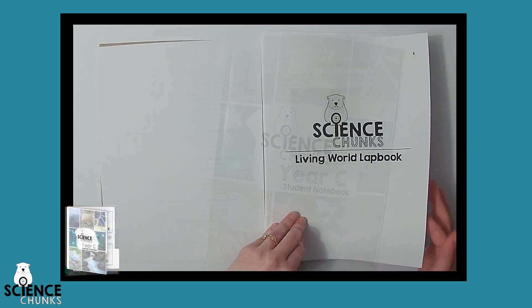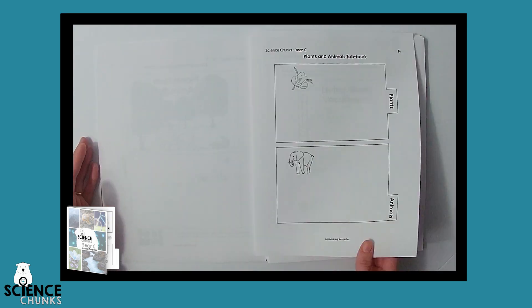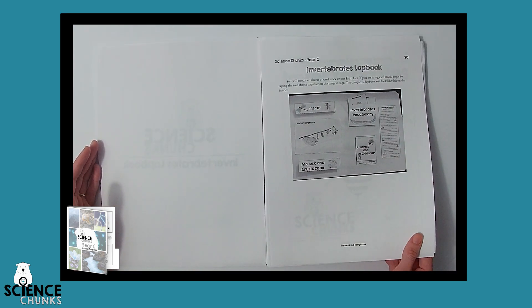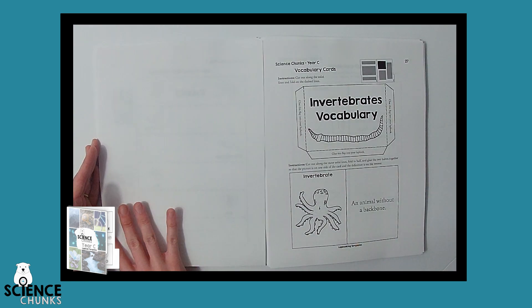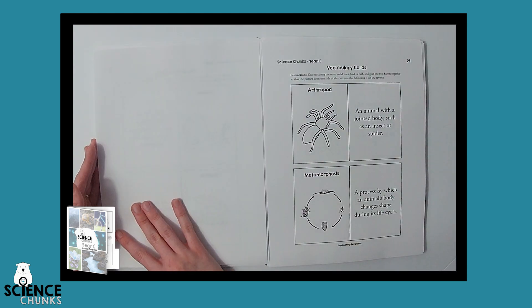If you choose the Printed Bundle Plus option, you'll also get the lap booking templates. These templates include lap book overview sheets for each unit, and all the mini books you'll need to make a lap book for each unit.